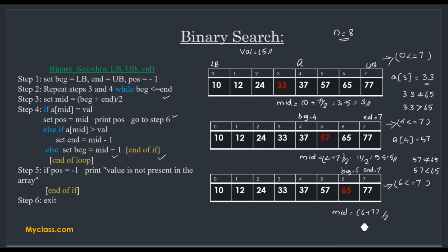For the third iteration, mid = (6 + 7) / 2 = 13 / 2 = 6.5, so mid equals 6. We check a[6], which equals 65. Now the if condition is true: 65 equals 65. So position equals mid, which is 6. We print position 6 and the algorithm terminates. After each iteration we are dividing the problem in half: first searching 8 elements, then ignoring the first half and dividing the remainder again.